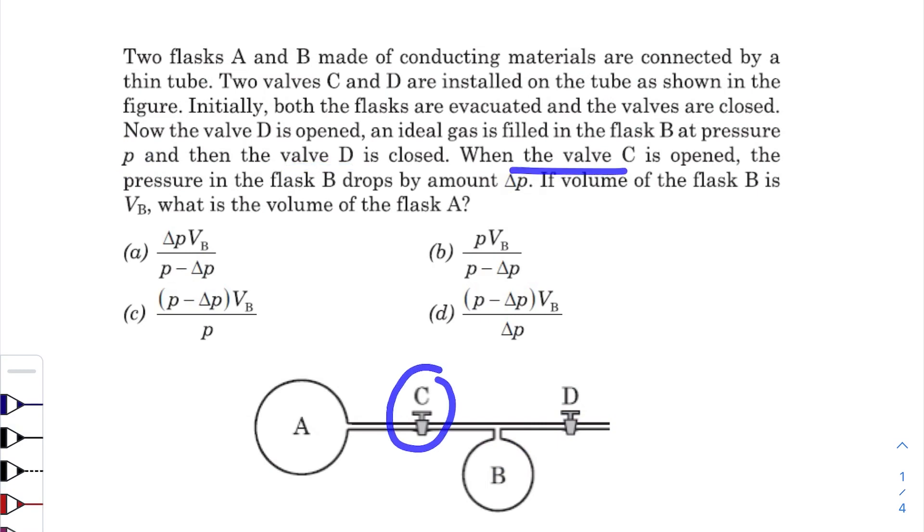When valve C is opened, the pressure in flask B drops by amount ΔP. So initially it was P, then it falls to P minus ΔP, because it drops by amount ΔP. If the volume of flask B is VB, what is the volume of flask A?